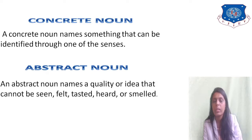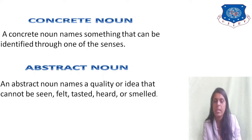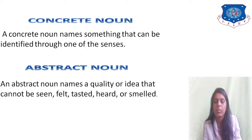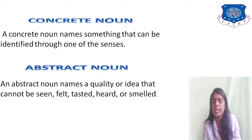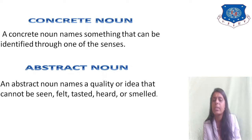A concrete noun names something that can be identified through one of the senses — like taste or smell — through which you can identify something. An abstract noun refers to a quality or idea that cannot be seen, felt, tasted, heard, or smelled. So a quality which cannot be felt, heard, tested, or smelled is an abstract noun.